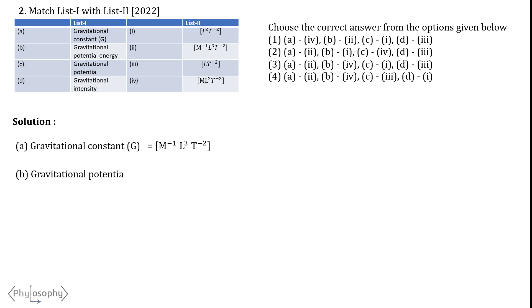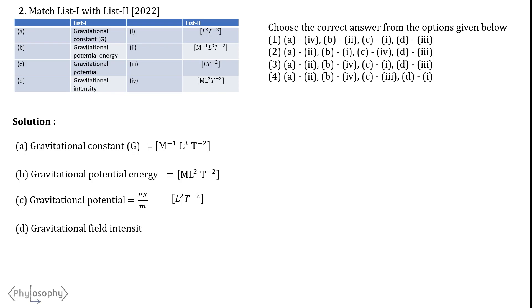The dimensional formula for the gravitational constant is M⁻¹L³T⁻². The next physical quantity is gravitational potential energy — the energy an object possesses due to its position in a gravitational field — with dimensional formula ML²T⁻². Gravitational potential, defined as work done by the gravitational field moving a body from infinity to a given position, has dimensional formula L²T⁻². Gravitational field intensity, the strength of the gravitational field on a unit test mass, has dimensional formula LT⁻². So option 3 is the correct answer.